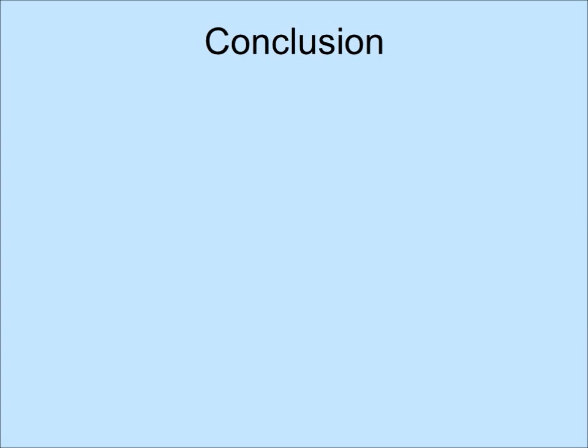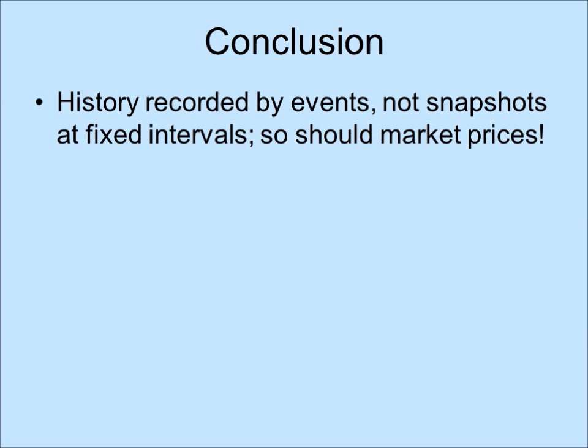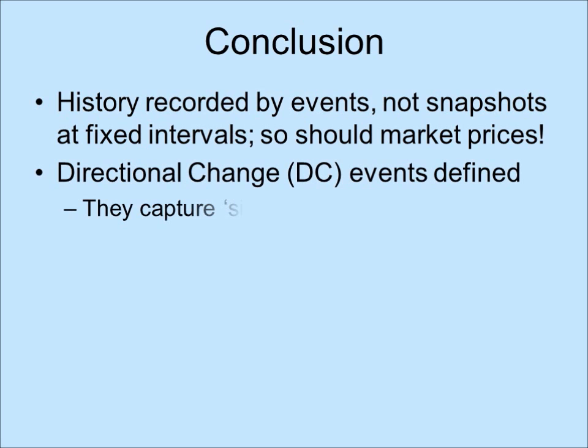To conclude, when history is recorded, one does not report snapshots at fixed intervals — one records significant events whenever they come. Yet most researchers record market price movements at fixed intervals. Unfortunately, significant events may not be captured by such snapshots. Richard Olsen defined a new concept called directional changes, defined by a scale that the observer cares about.